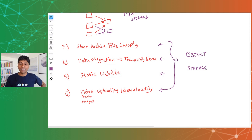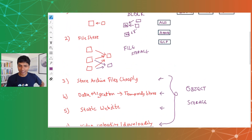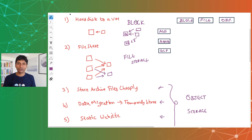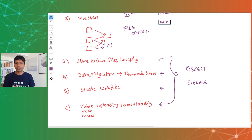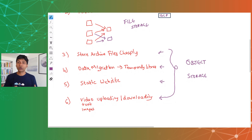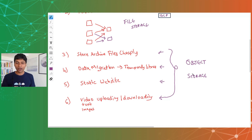Let's quickly review the different types of storages. If you want a storage device which can be attached only with one VM — similar to a hard disk attached to your computer — you go for block storage. If you want to create a file share and connect multiple VMs, you go for file storage. For all other use cases — storing archive files, a temporary store for data migration, creating a static website, or uploading and downloading files — you would go for object storage.